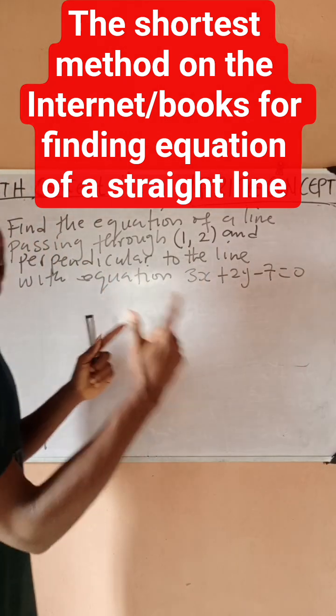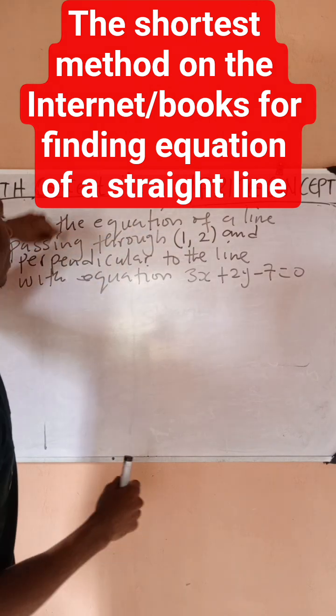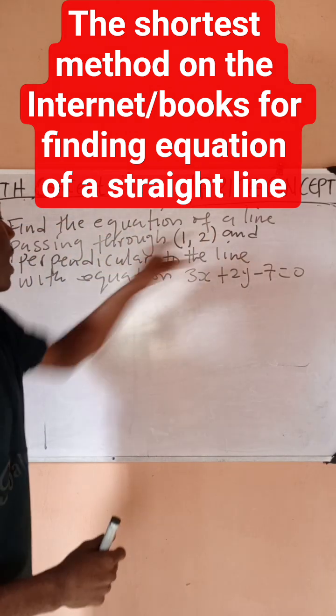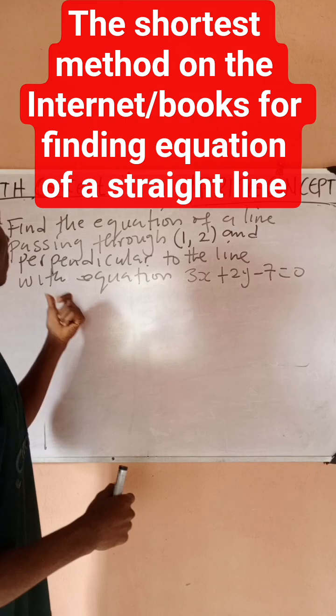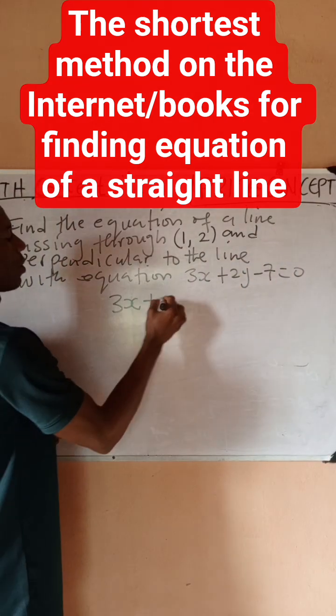I have this problem on the board to analyze. The question says find the equation of a line passing through the point (1, 2) and perpendicular to the line with equation 3x + 2y - 7 = 0.